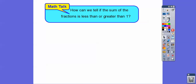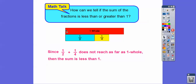How can we tell if the sum of the fractions is less than or greater than one? If you look underneath this, this is one whole right here. Since one half plus one fourth doesn't stretch all the way to the end, the sum is going to be less than one. We'll have another one in this lesson where it stretches out past it, so it'll be greater than one.